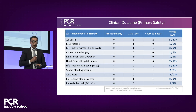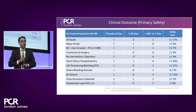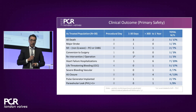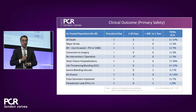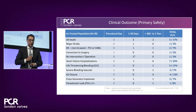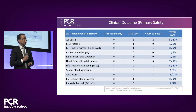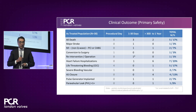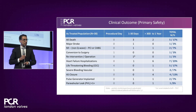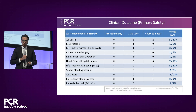Regarding ASD closure: the delivery system has a 30 French diameter, and there was no need for acute closure of the ASD during the procedure or within the first 30 days. In the long run, four patients underwent ASD closure. The perivalvular leak rate was very low — only one patient had PVL greater than 1+, a rate of 3%.